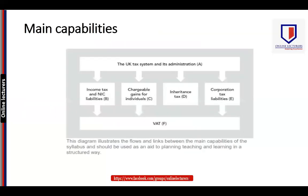These are the relationships between the different components of the paper. Mainly, this paper comprises the UK tax system and its administration, which is a brief part of the syllabus. Section B deals with income tax and national insurance contribution liabilities, which is one of the most important parts of the syllabus.